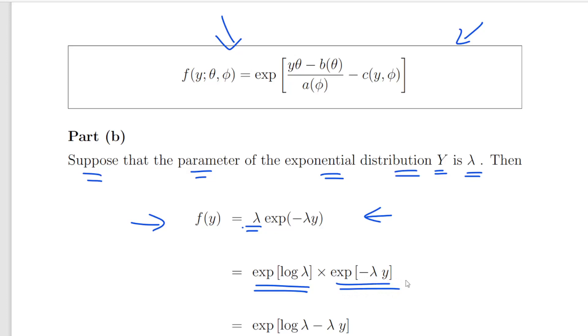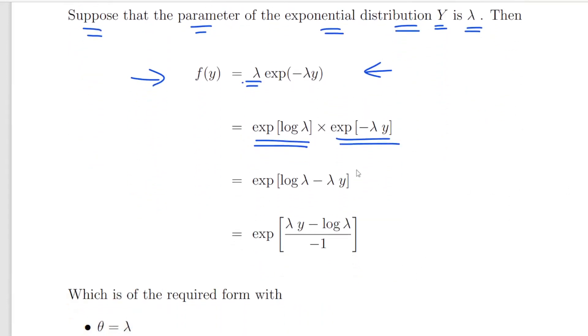Now essentially what we can do is multiply them out, which means adding the components together. So what we have is the exponential of log lambda minus lambda times y, and what we could do is re-express that as lambda times y minus log lambda divided by minus one. So the exponential of that is what we have in the form that we need.